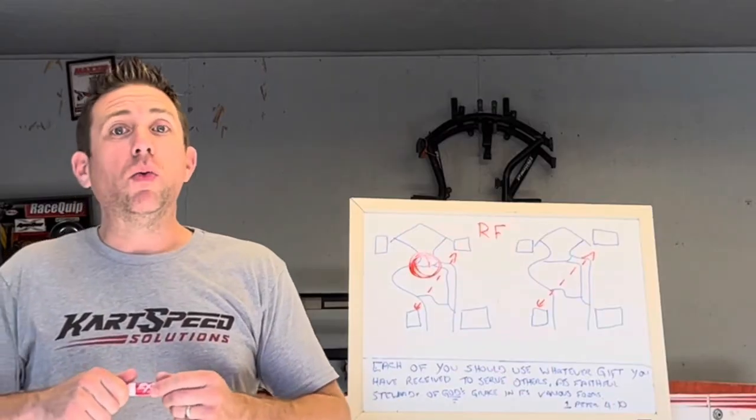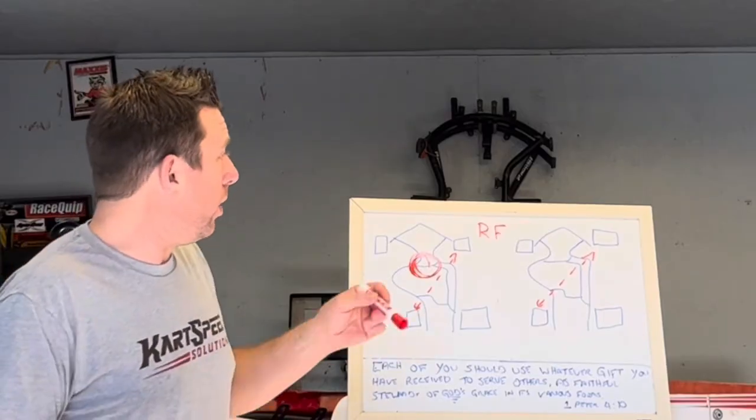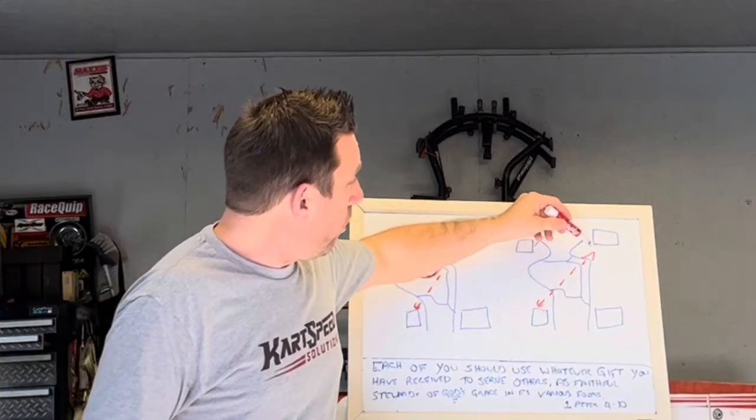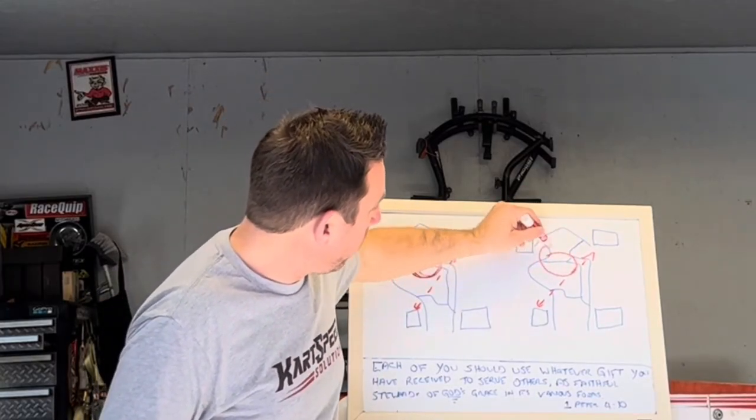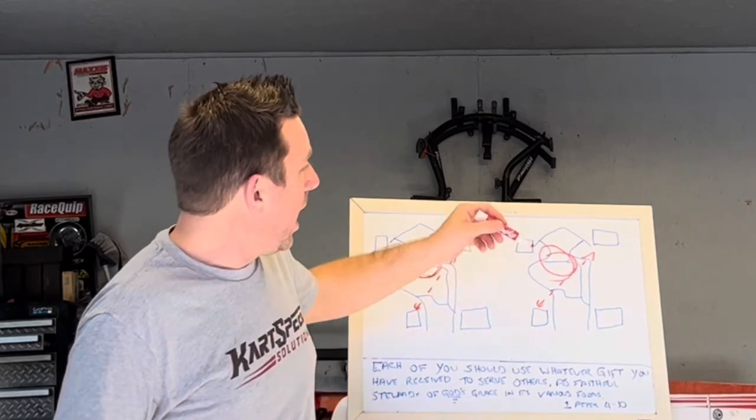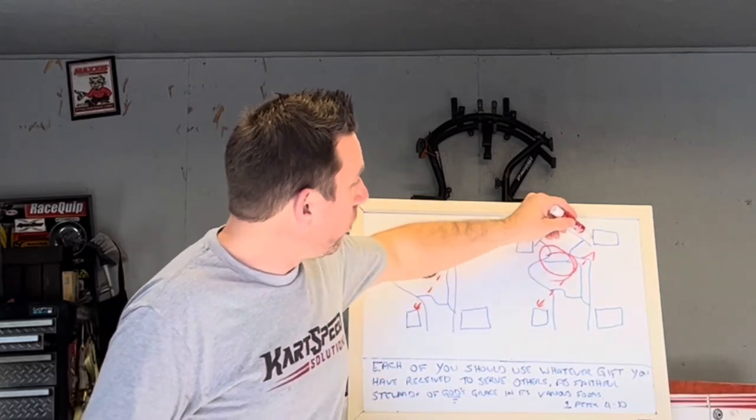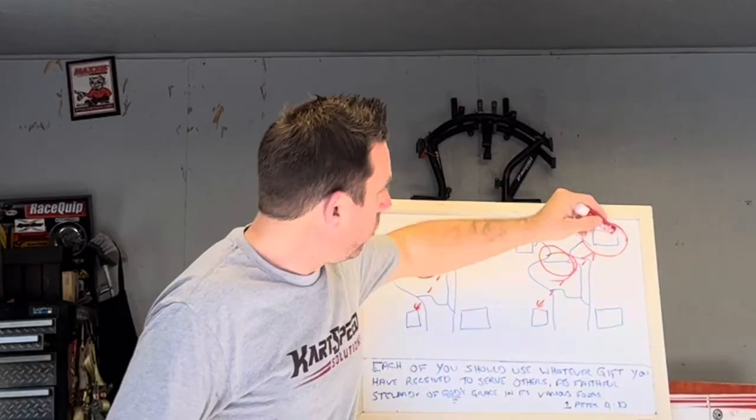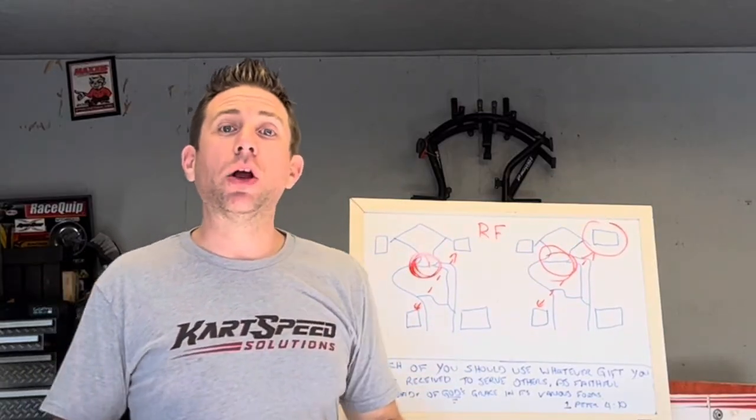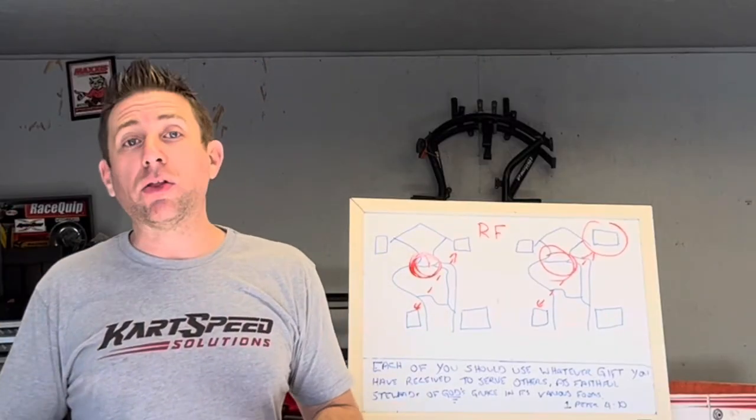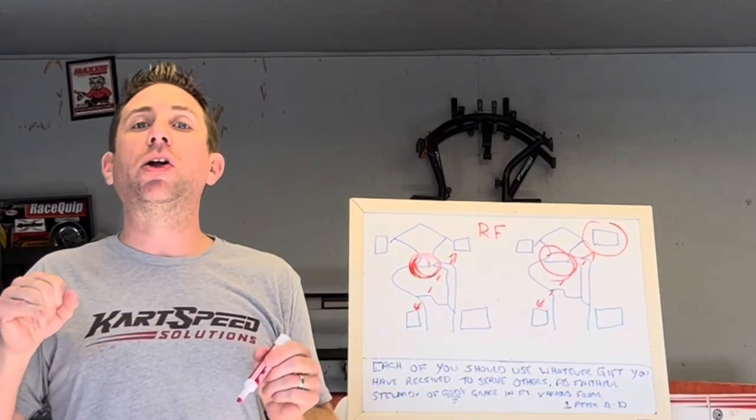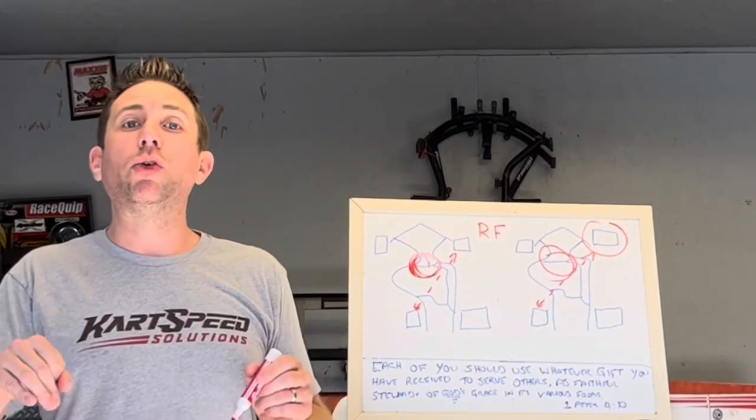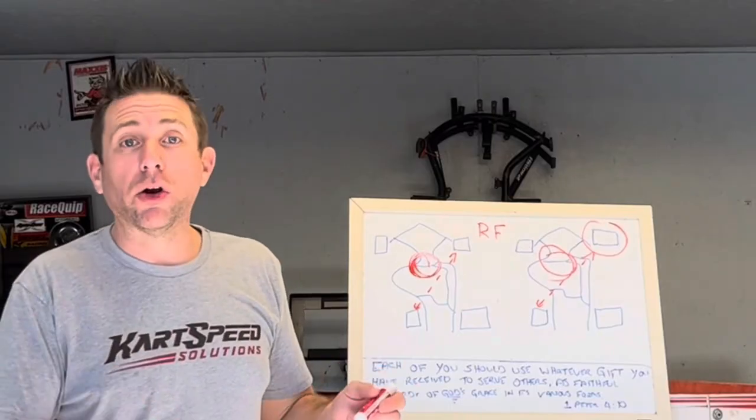Well then what happens when you move it forward? When we move it forward, you're moving the right front away from the go-kart's center of gravity and it takes longer for the weight to transfer to the right front. So therefore you're essentially taking bite out of the right front and it will slow the front end down, and the go-kart's not going to transfer as much weight onto the right front, therefore it's not going to turn as much.